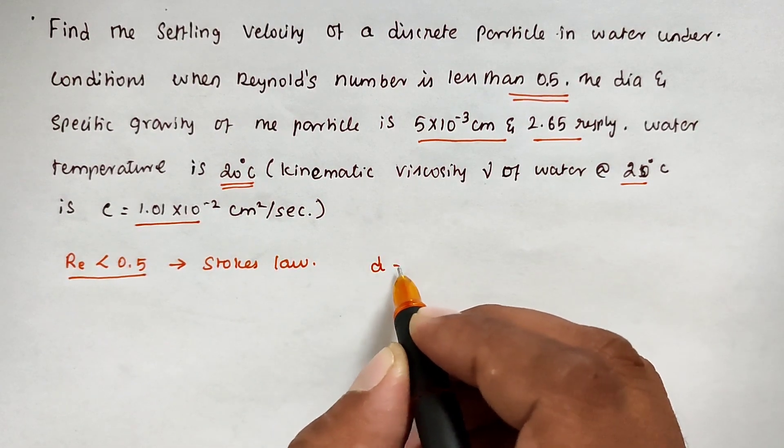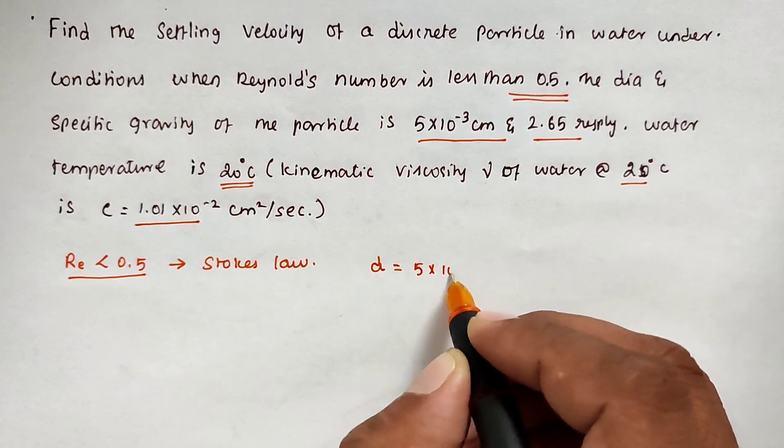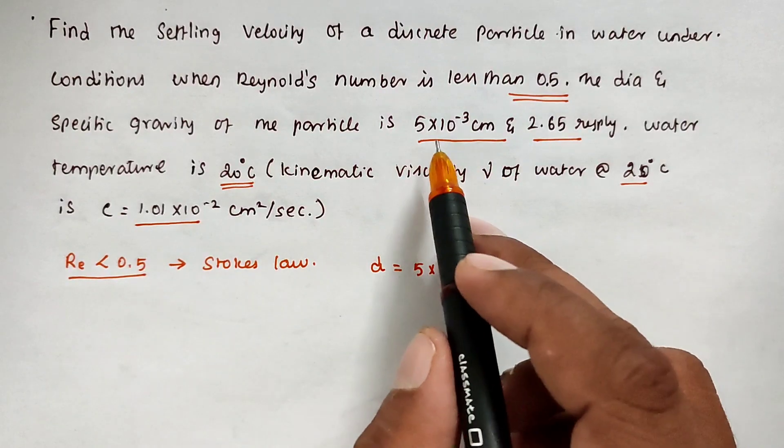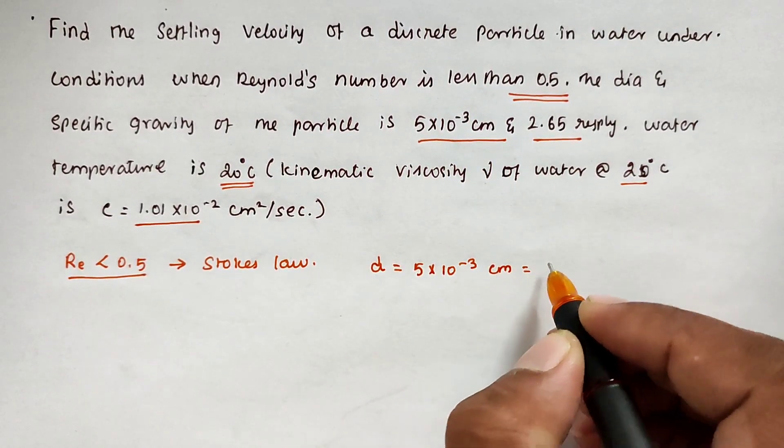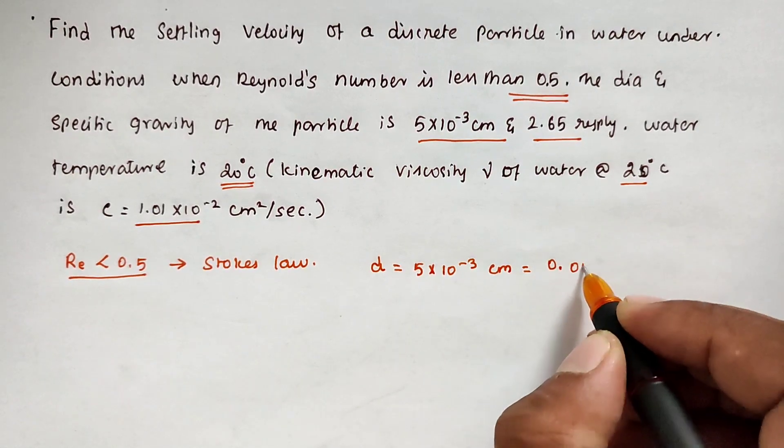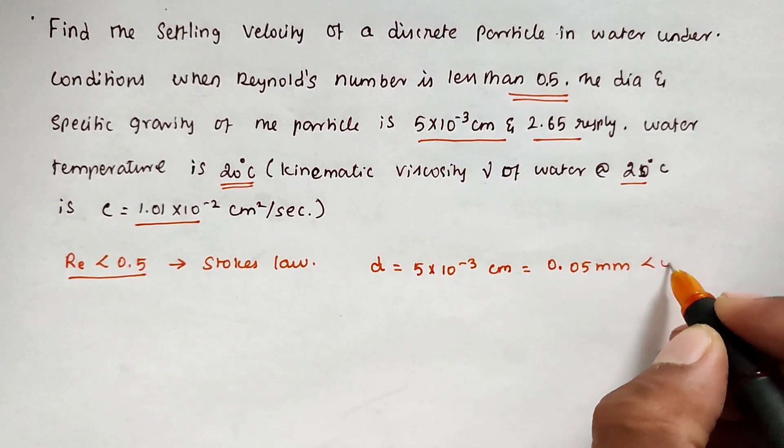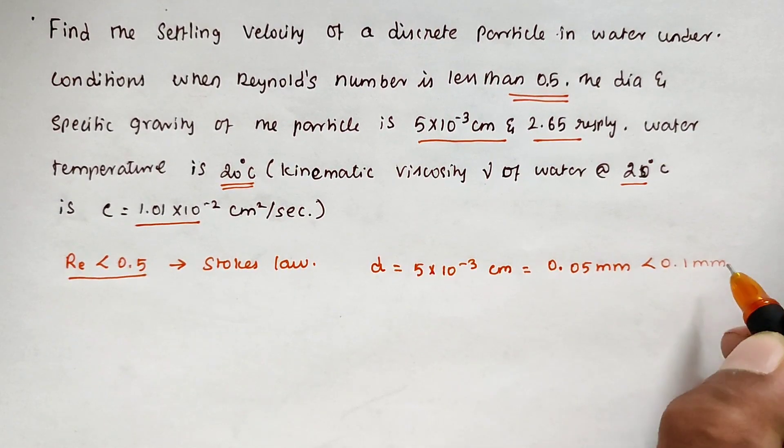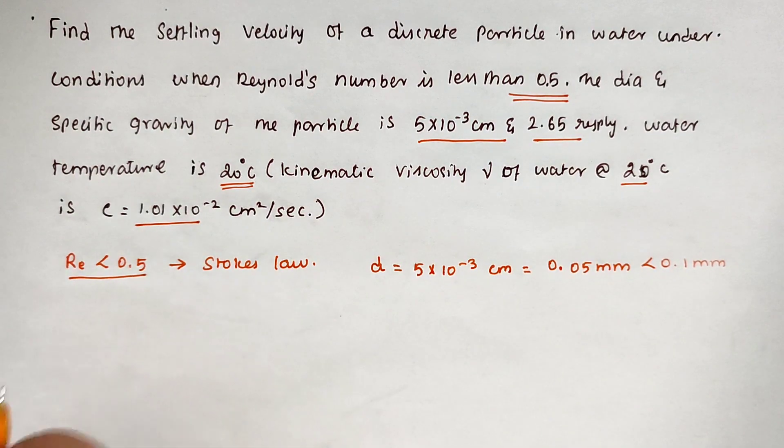The diameter d is 5×10^-3 cm. Converting to millimeters, that is 0.05 mm, which is less than 0.1 mm. Since the diameter is less than 0.1 mm, we can use the formula